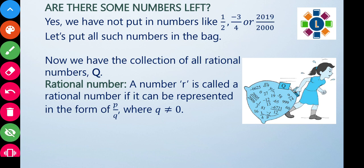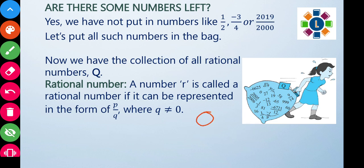Natural numbers like one, two, three can be written as one by one, two by one, three by one — all in P/Q form. So natural numbers are rational numbers. Whole numbers: zero can be written as zero by one, or zero by two — the answer is still zero. Since Q is not zero, whole numbers are also rational numbers.